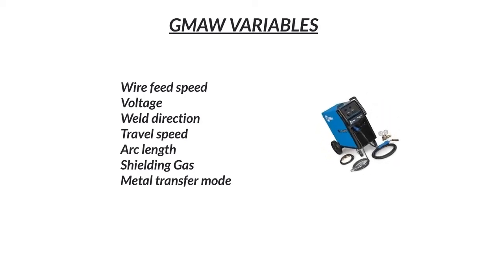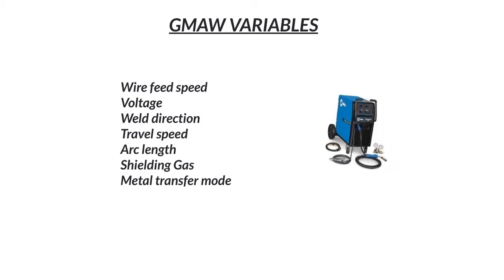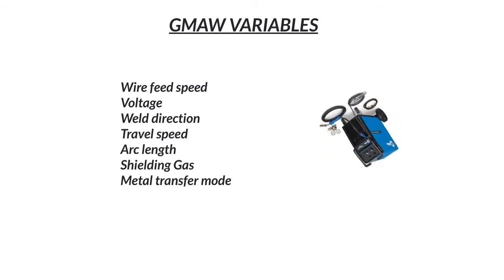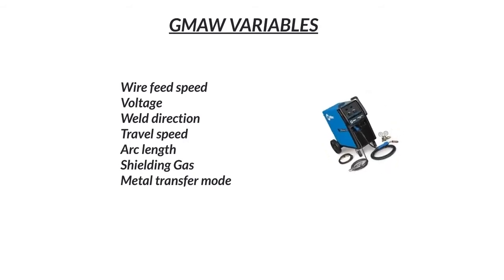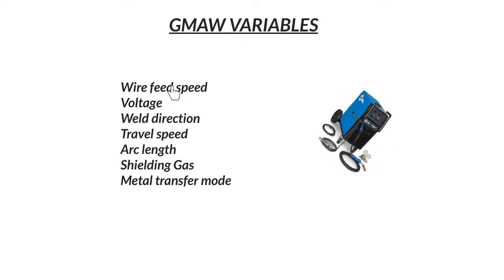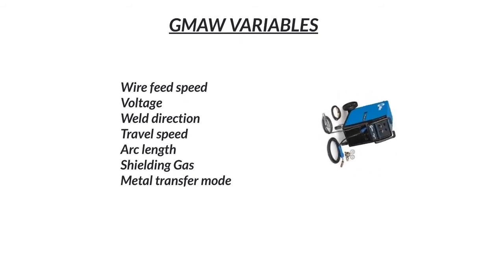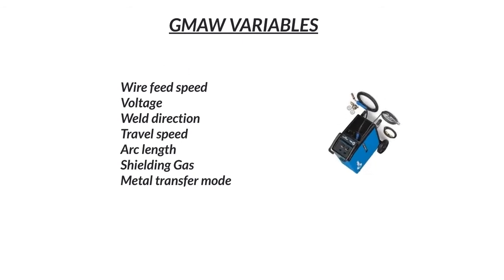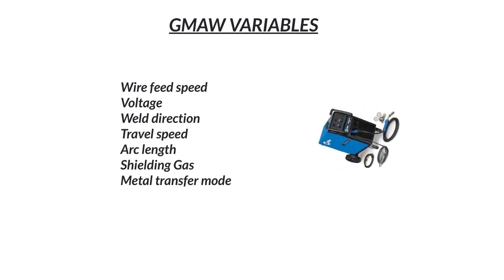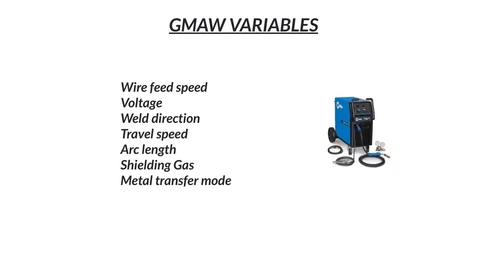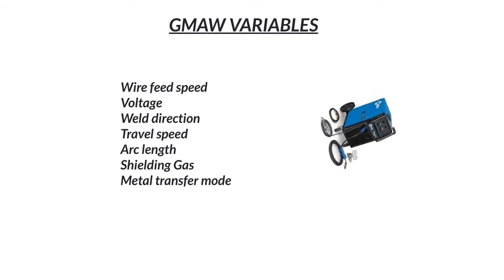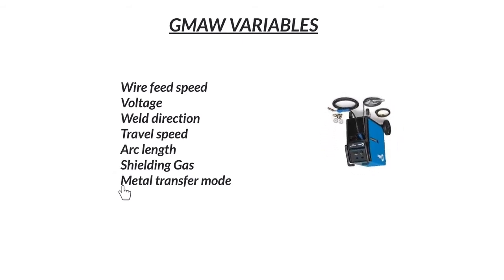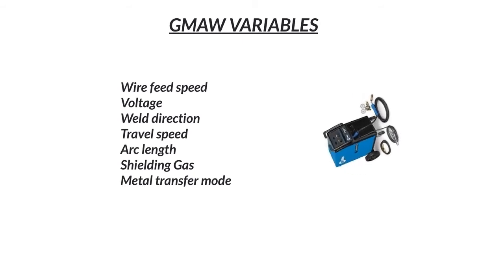Gas metal arc welding variables. Here's a list of items that will affect your MIG welds. These items include wire feed speed, voltage — those are two very important ones — weld direction, whether it be a push or pull, travel speed, arc length, shielding gas type, and metal transfer mode.